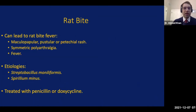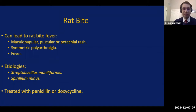Next we have rat bites. Rat bites can lead to a condition called rat bite fever. Skin manifestations may include a maculopapular, pustular, petechial, purpuric, or ecchymotic rash. They have associated symmetric polyarthralgia and fevers. They are caused by two main pathogens: Streptobacillus moniliformis and Spirillum minus. Treatment is with penicillin or doxycycline.